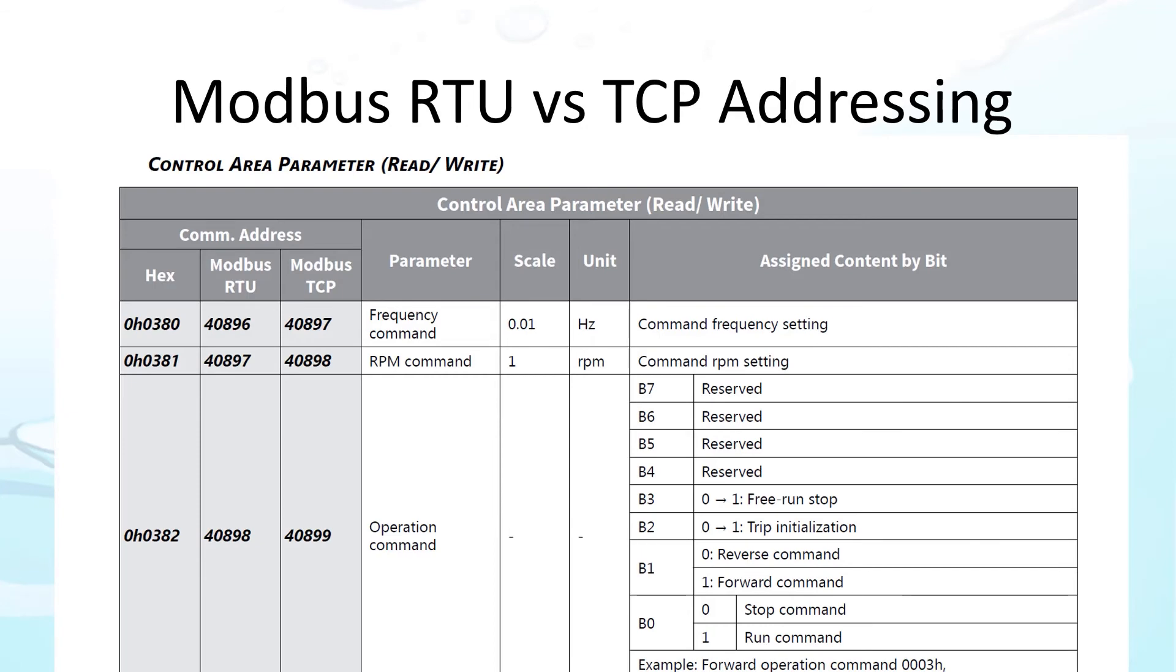Did you notice in the previous video that Modbus TCP and Ethernet IP use different addressing than Modbus RTU? So be careful if you ever decide to switch to Ethernet comms, you'll have to add one to each address for everything to work.